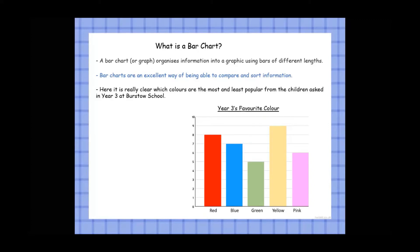Here it's really clear which colours are the most and least popular for the children asked in Year 3. You can see clearly, without even necessarily counting the numbers up the side, that yellow is the longest bar — meaning most people voted for yellow. And we can quite easily see that green has the lowest bar. Bar charts are really good when comparing lots of numbers, allowing us to compare bars and therefore compare the data.